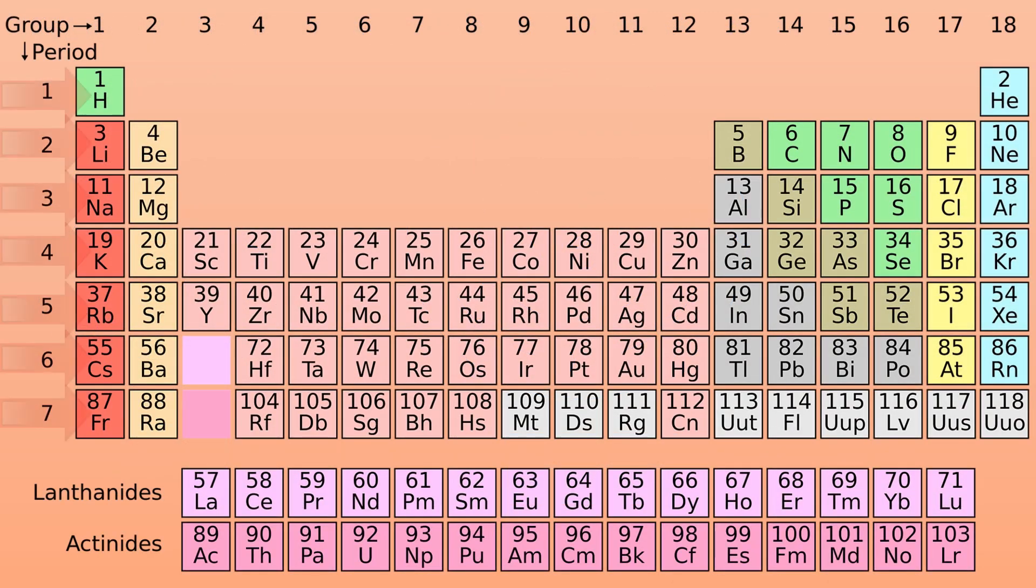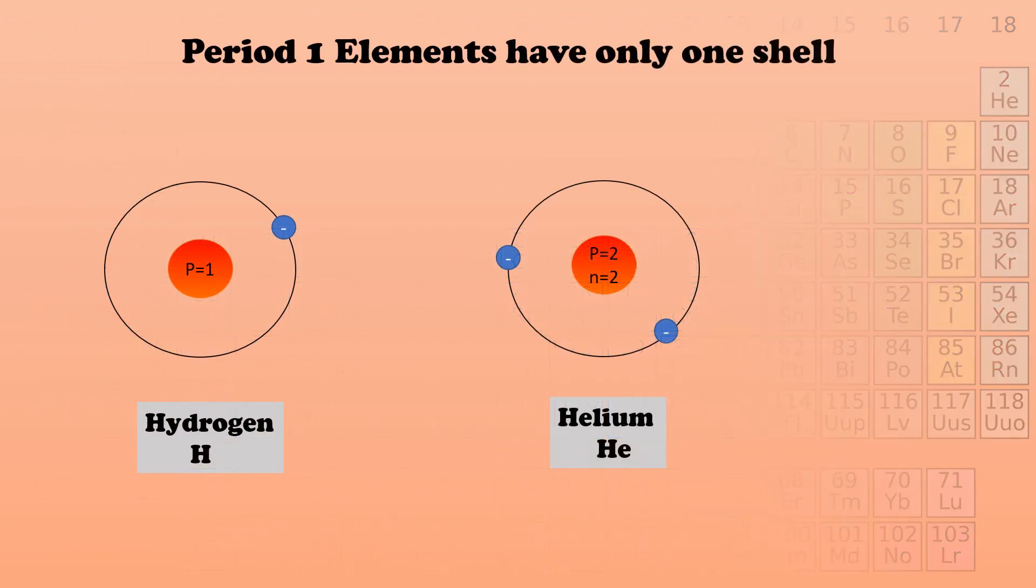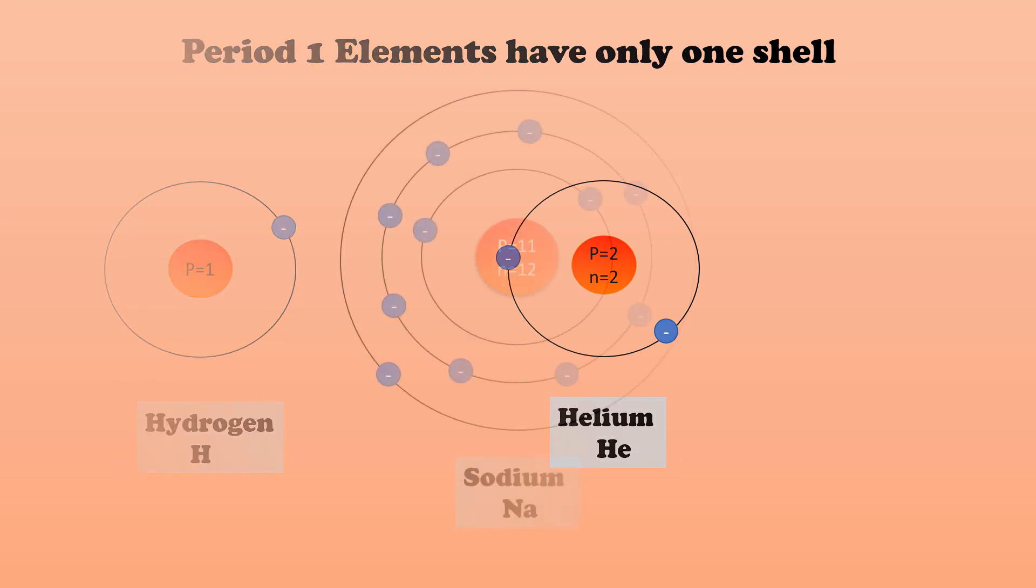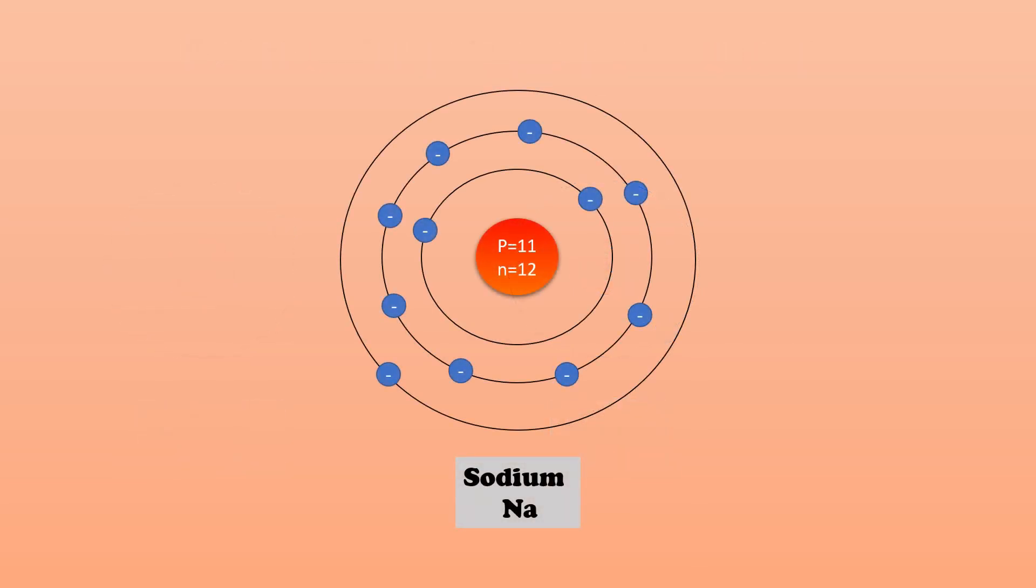There are seven periods in the table. Period number indicates the number of shells present in an atom. Period 1 elements, hydrogen and helium, have only one shell. Sodium is in the third period and it has three shells.